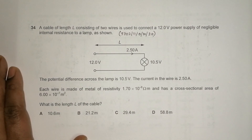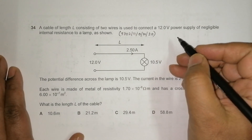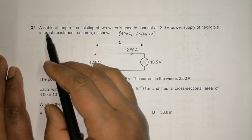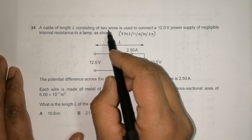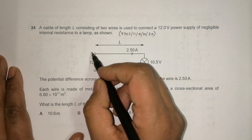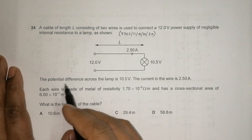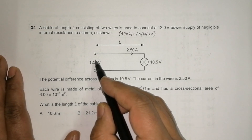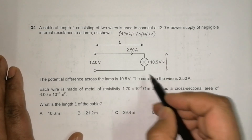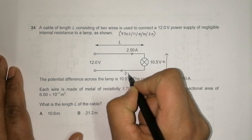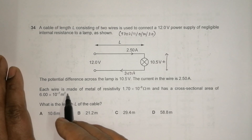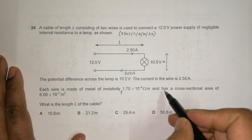Hello folks. This is the October/November 2020 Paper 1, Question 34. This question is concerned with the chapter current electricity. A cable of length l consists of two wires used to connect a 12-volt power supply of negligible internal resistance to a lamp. The potential difference across the lamp is 10.5 volts, the current in the wire is 2.5 amperes, and in this series arrangement the current is the same throughout. Each wire is made of a metal of resistivity ρ and has a cross-sectional area A.